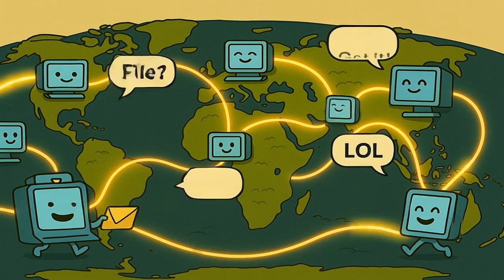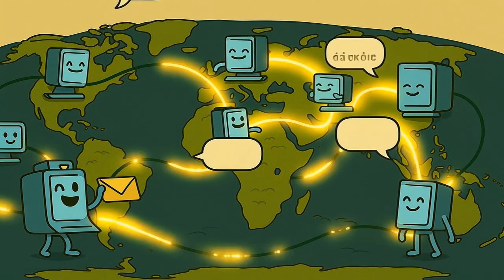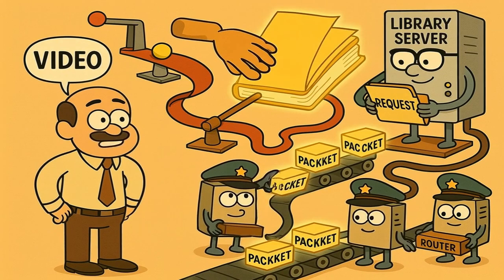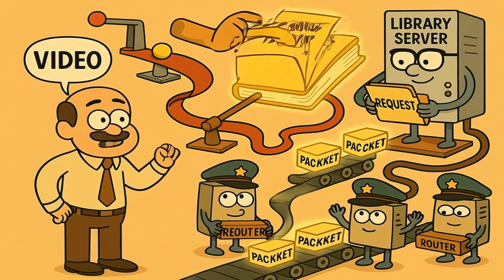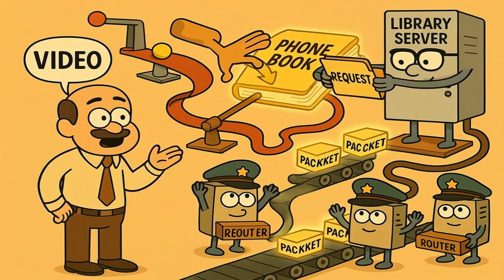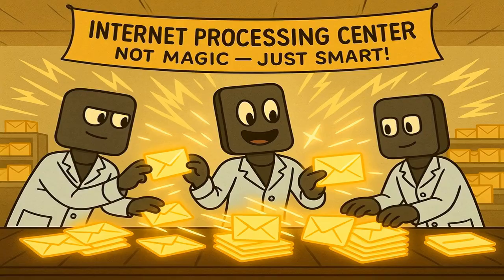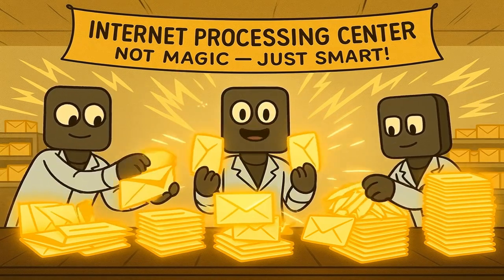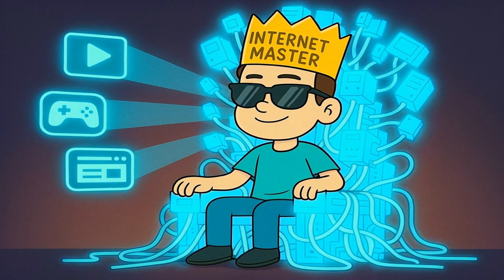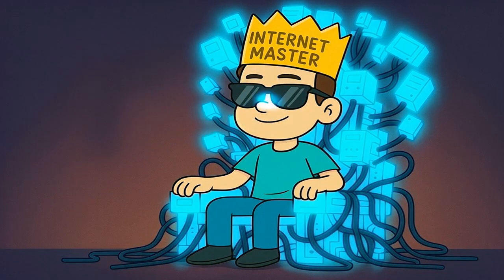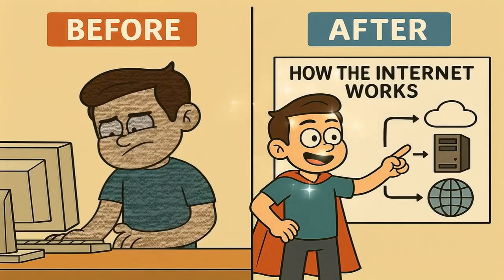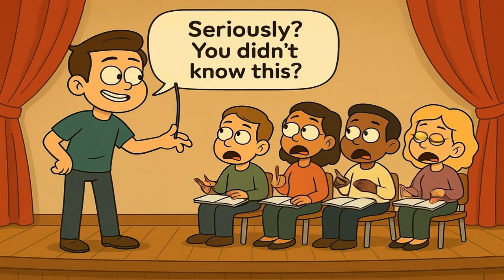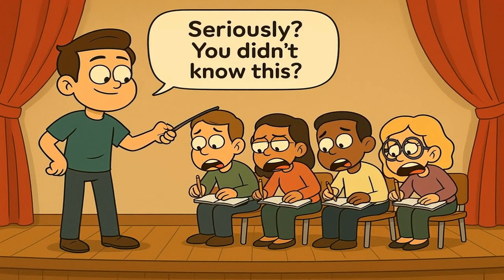So, the internet is simply a giant network of computers talking to each other through really long wires. You ask for something, your request gets looked up in a giant phone book, it gets sent to the right library computer, and the thing you asked for gets chopped into little pieces and mailed back to you through a series of traffic cops. See? Not magic. Just very, very fast mail being sent by very, very smart machines. And there you go — now you officially understand how the entire digital world gets delivered to your eyeballs. You're no longer just a person who uses the internet. You're a person who gets it. You're basically a genius. So go on — explain it to someone else. Make them feel silly for not knowing.